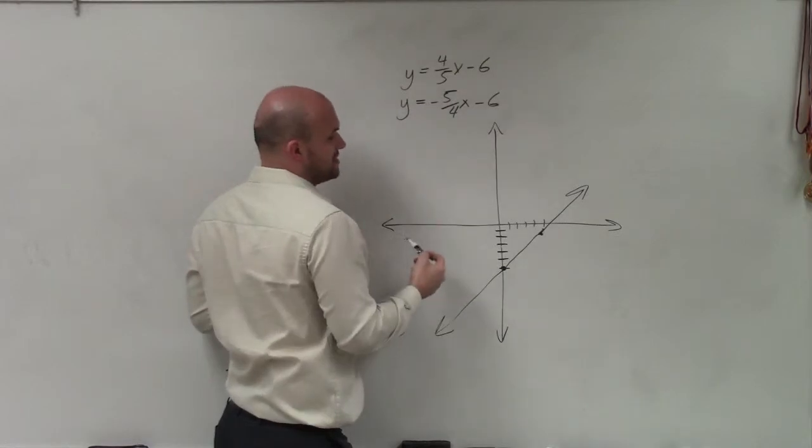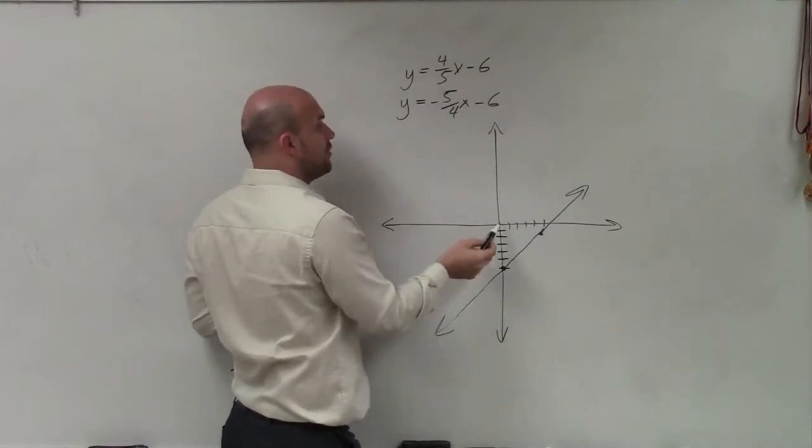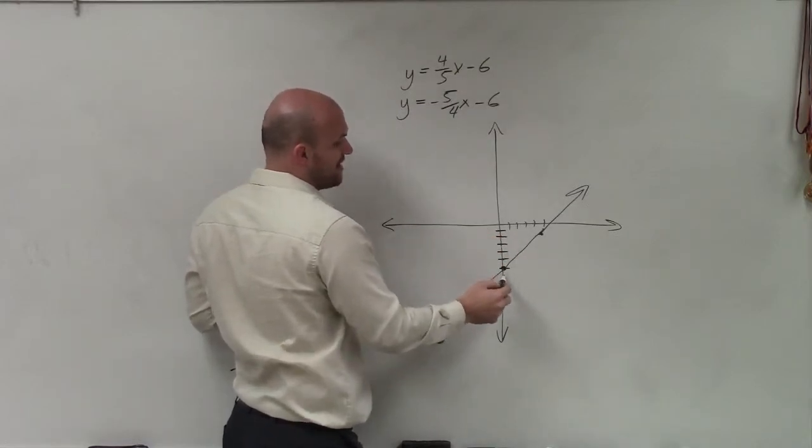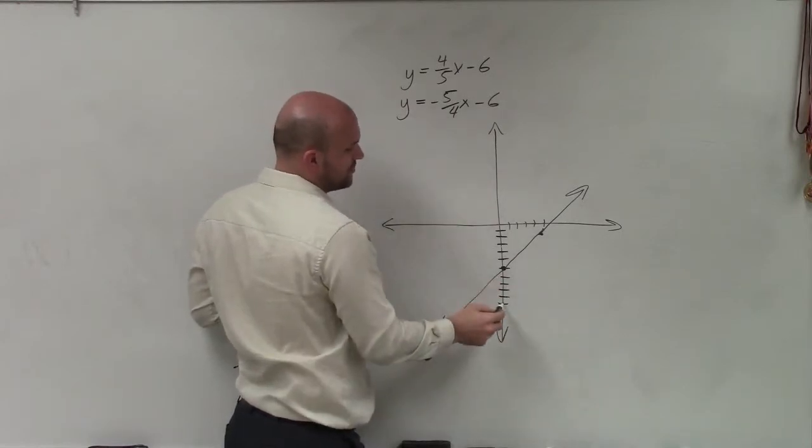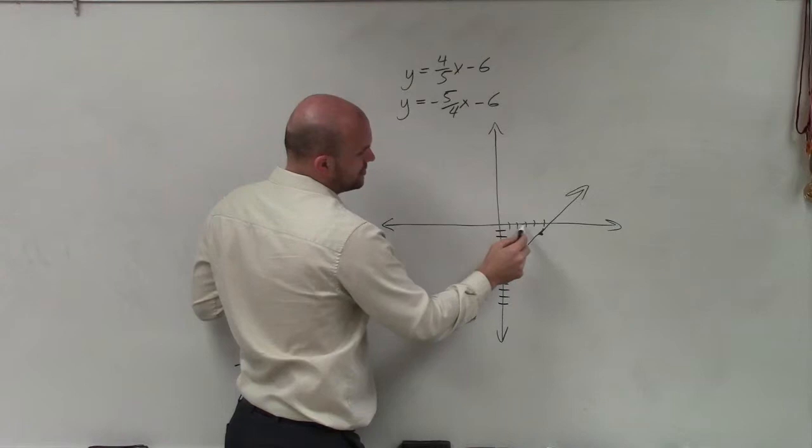Now let's do the next equation. But for the next equation, instead of going up four over five, I'm now going to go down five: one, two, three, four, five, and then to the right four: one, two, three, four.